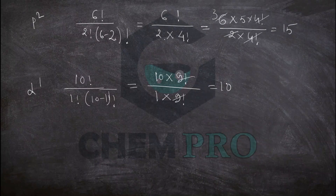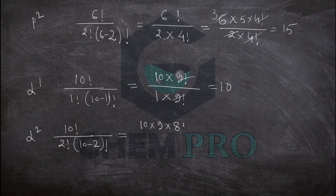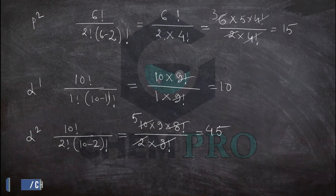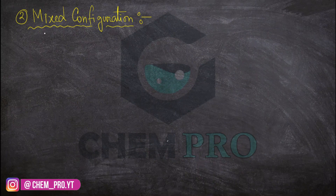For d2: it will be 10! / (2! × (10−2)!) = (10 × 9 × 8!) / (2 × 8!) = 45. So d2 has 45 microstates. This is how we calculate the number of microstates using the direct configuration.